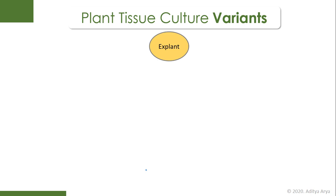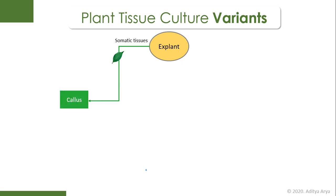An explant is a small part of the plant used as starting material for plant tissue culture. Depending on what kind of explant you choose and how you treat it, different variants of plant tissue culture are defined. Considering somatic tissues first — these might include different parts of the plant like leaves, stem, or any soft differentiated part. Taking a leaf as an explant, it is sterilized and through the process of plant tissue culture it is turned into callus.